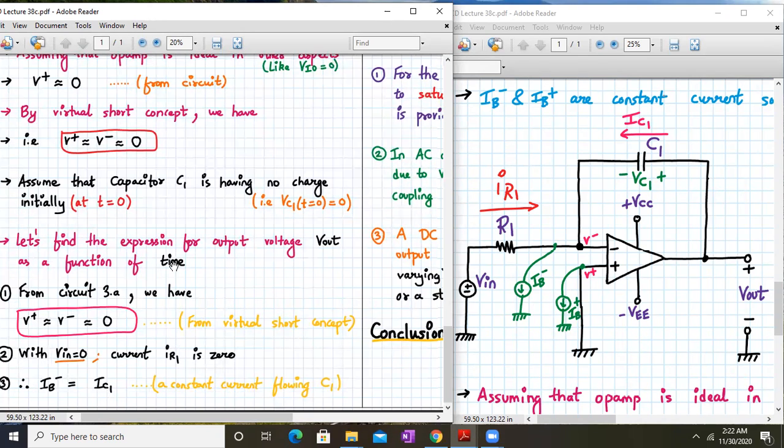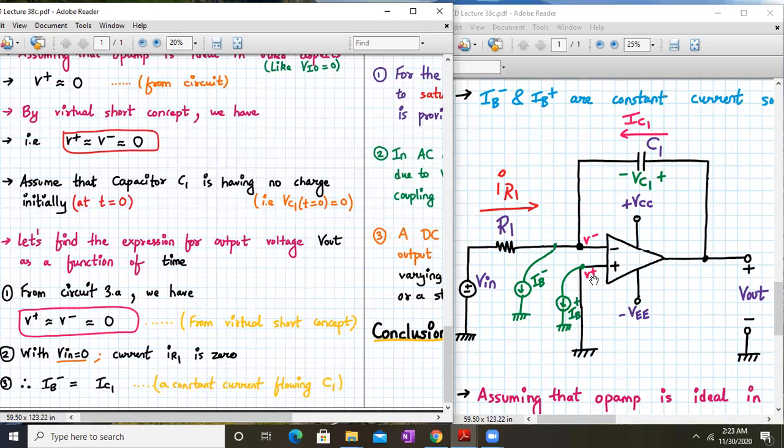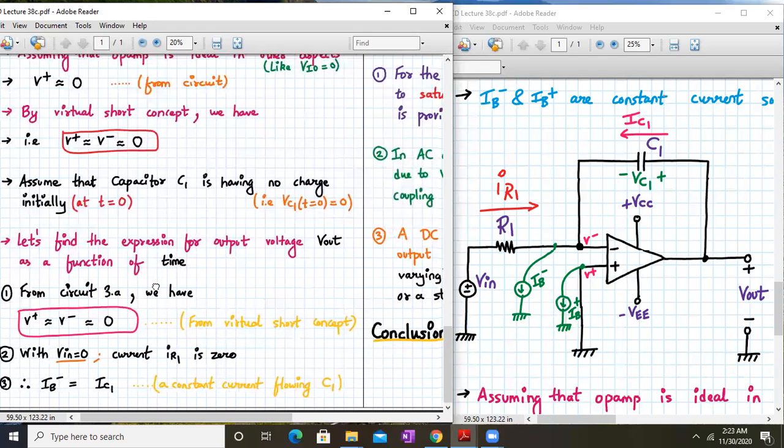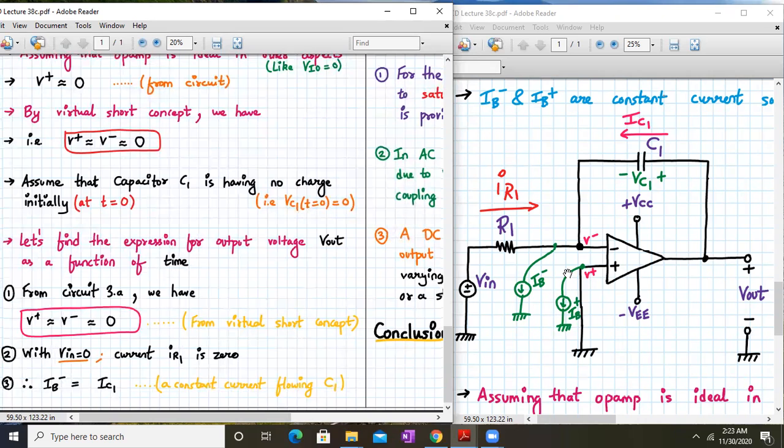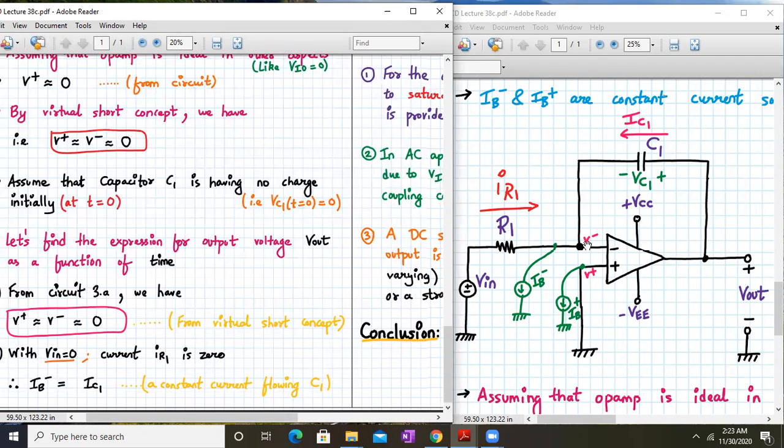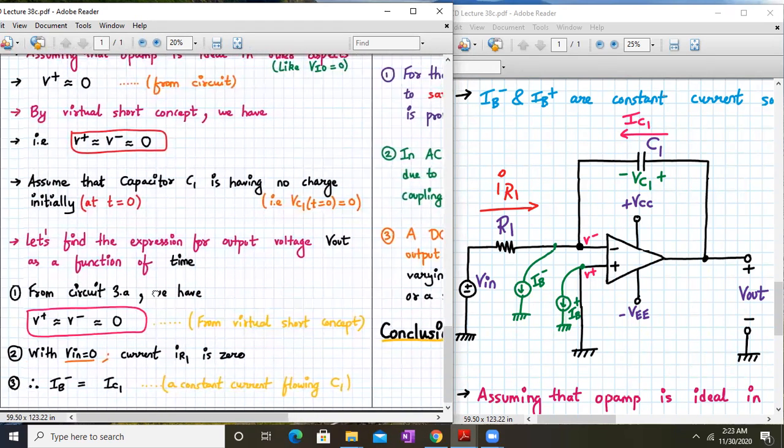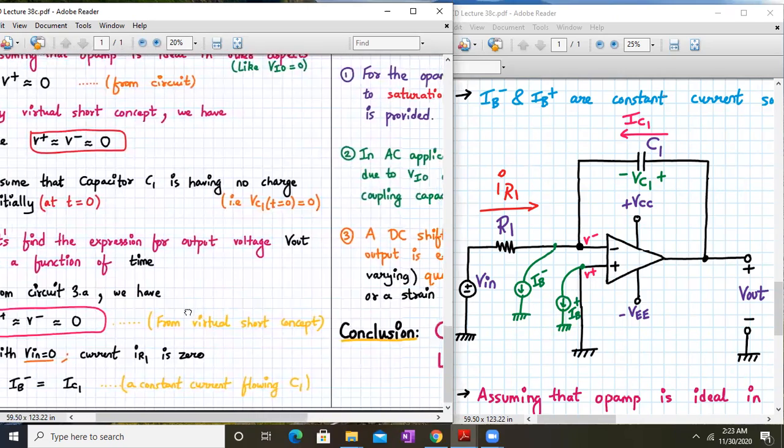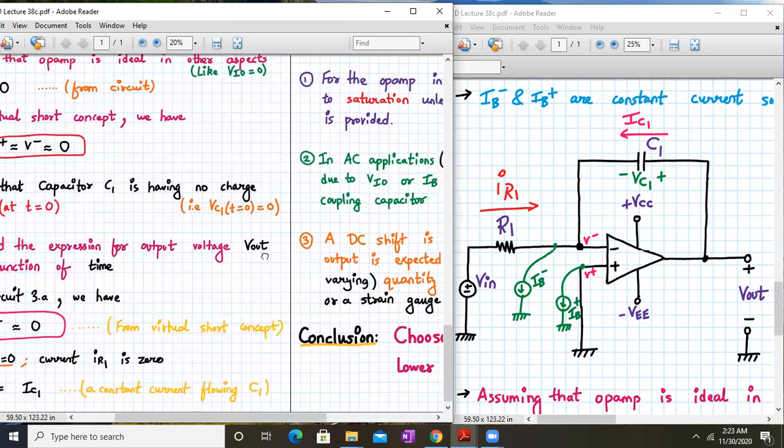Let's find the expression for the output voltage vout as a function of time. From this diagram we can easily say that since v+ is tied to the ground, v- will be virtually grounded. This is a virtual ground or a virtual short concept. Now v- equal to zero, ir1 will be zero. If I applied a KCL over here, ir1 will be equal to i- plus ic1. So over here the ic and ir1 are same. Basically ic1 and iv- are same because the constant current is going to the capacitor.